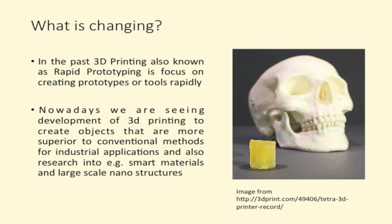Next, we move on to what is actually changing in 3D printing. In the past, 3D printing was known as rapid prototyping, focused on creating prototypes and tools. Now we are seeing that the development of 3D printing allows the creation of objects that are superior to conventional methods for industrial applications. Research into smart materials and large-scale nanostructures is also getting significant — on the image on the right, you can see the largest nanostructure 3D printed today, by a company called Tetra.